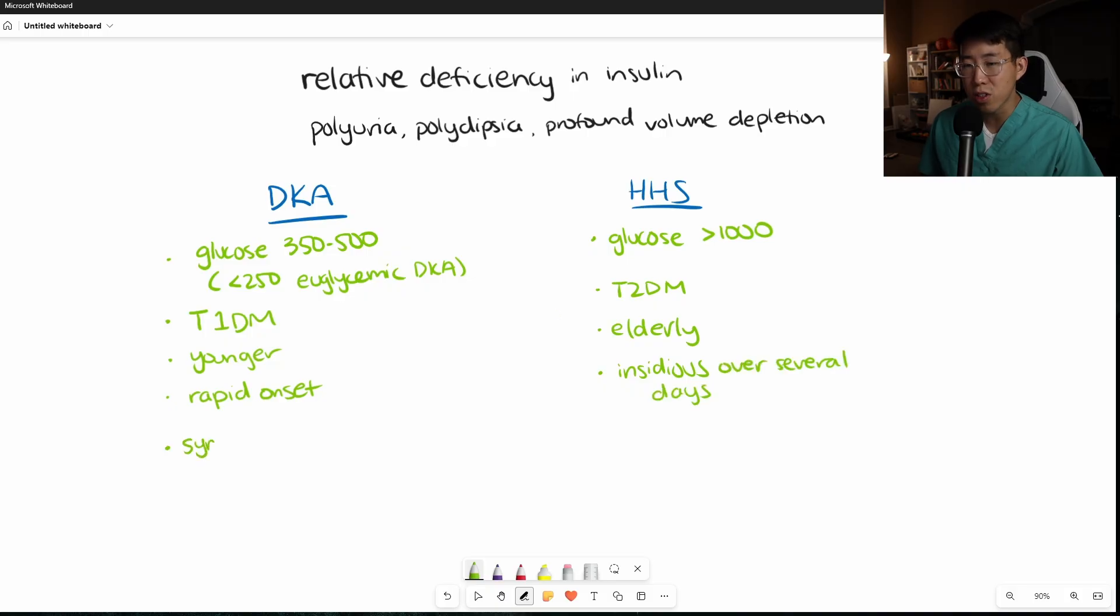In terms of symptoms that you can use to differentiate DKA and HHS, you may often see abdominal pain, nausea, vomiting, and shortness of breath with DKA. Whereas in HHS, you're going to see more neurologic symptoms, for example, coma or stupor. In fact, up to 25 to 50 percent of patients with HHS are going to be obtunded or in a coma.